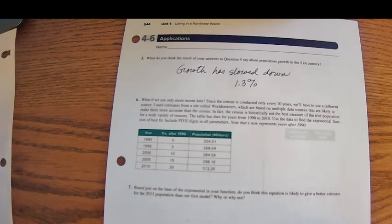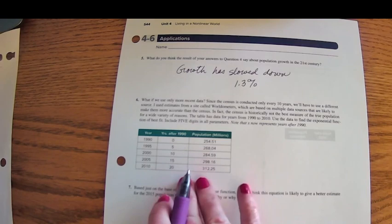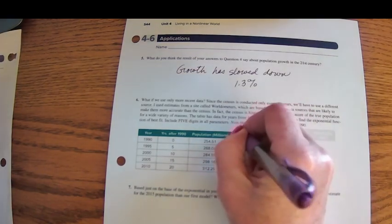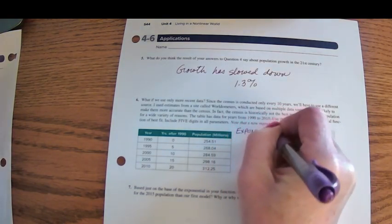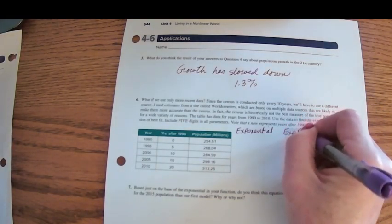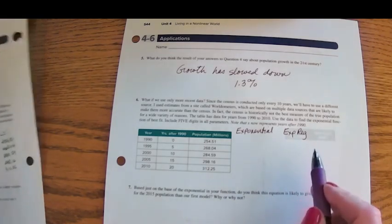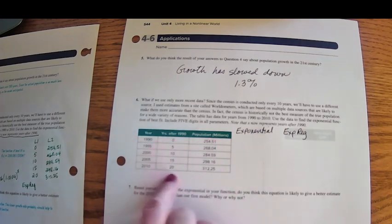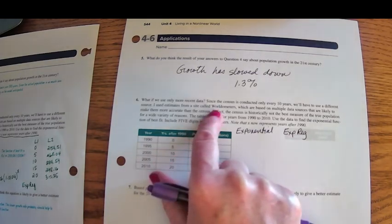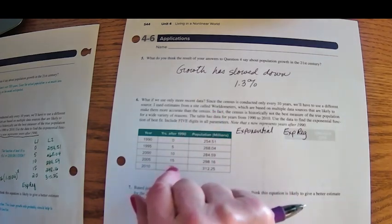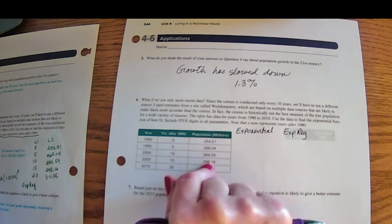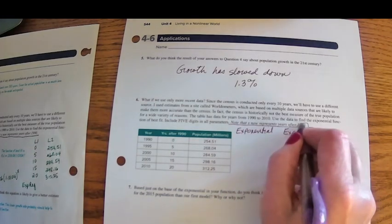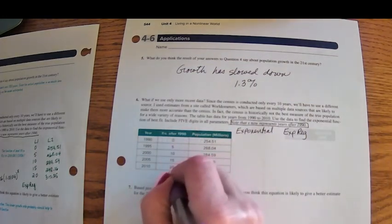So now we're ready to let the calculator do regression modeling to create the exponential function. We've already used the calculator to do linear regression. That's where we gave the calculator data values and we did linreg for linear regression. We want the calculator to come up with the exponential function using this data. So that's going to be expreg, standing for exponential regression modeling. And let me go ahead and read this. What if we were to use more recent data? So here's some more recent data from 1990 to 2010.